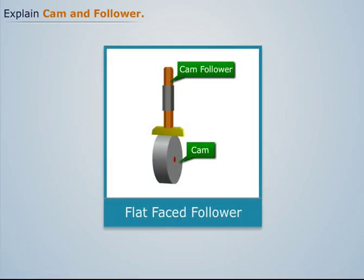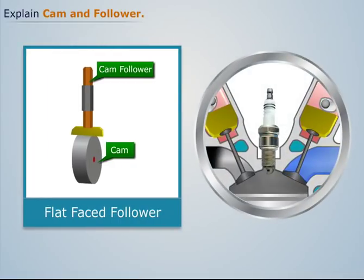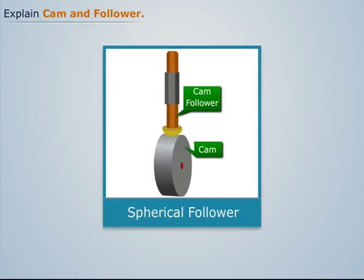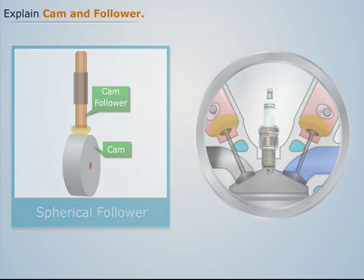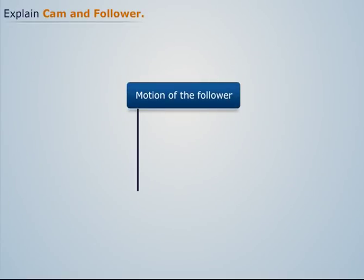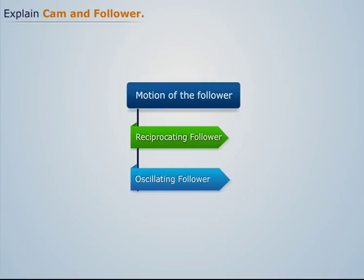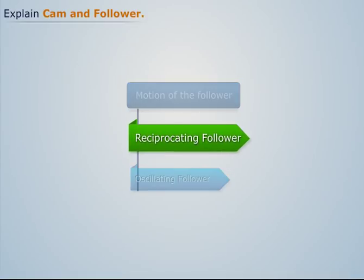When the contact end of the follower is a perfectly flat face, it is called a flat faced follower. This type of follower is generally used in automobile engines. When the contact end of the follower is spherical in shape, it is called a spherical faced follower. This type of follower is also used in automobile engines.